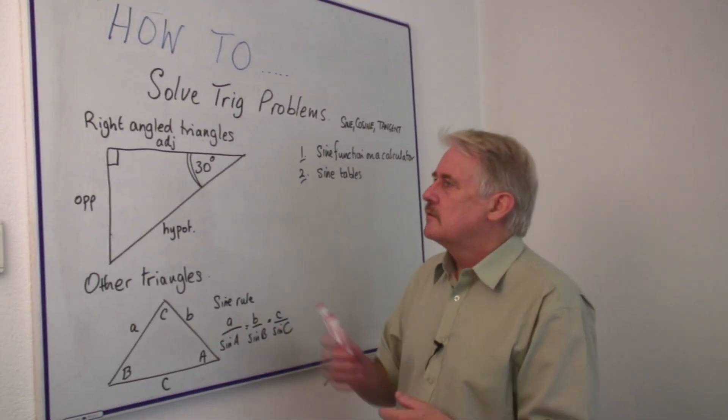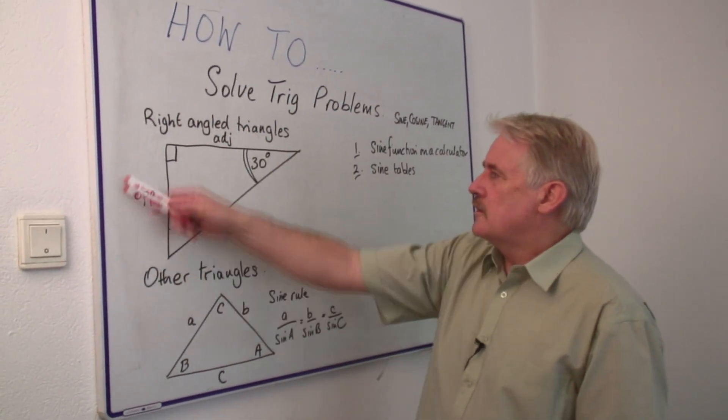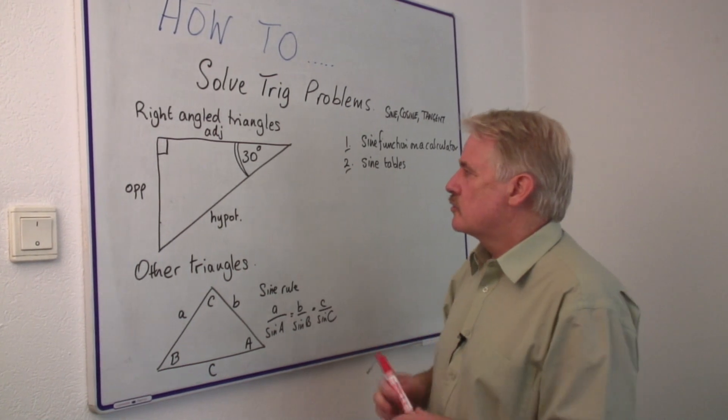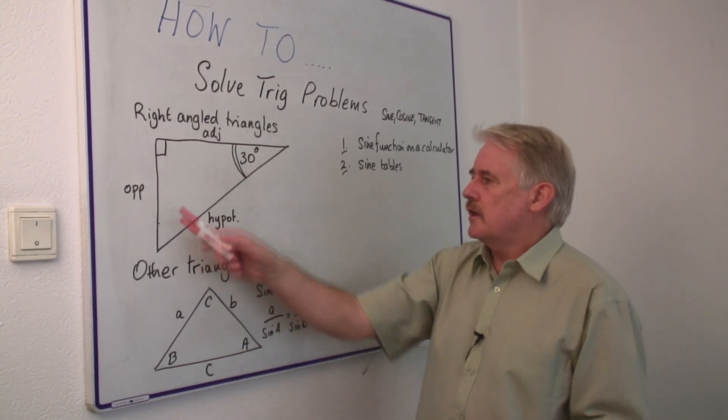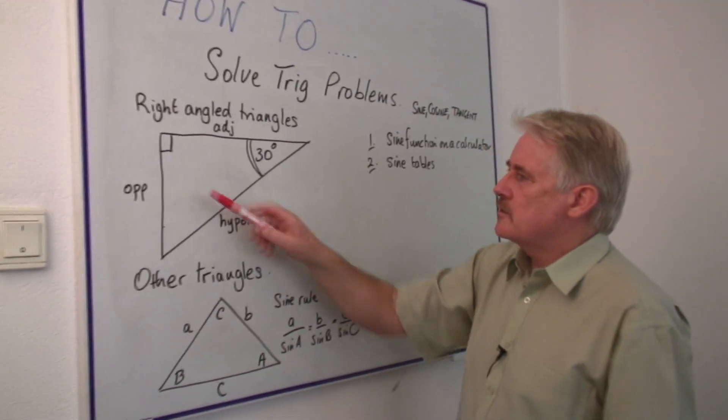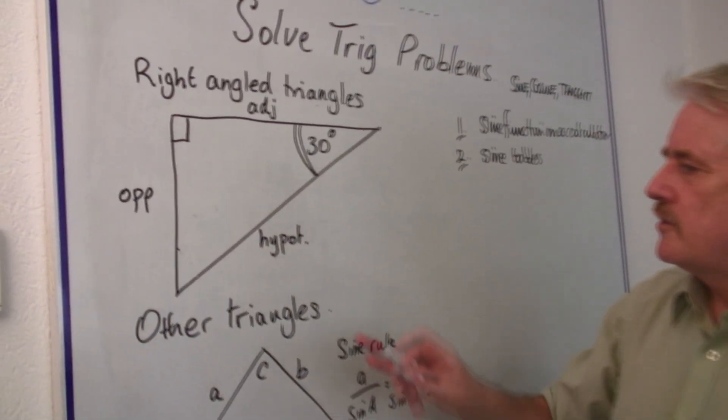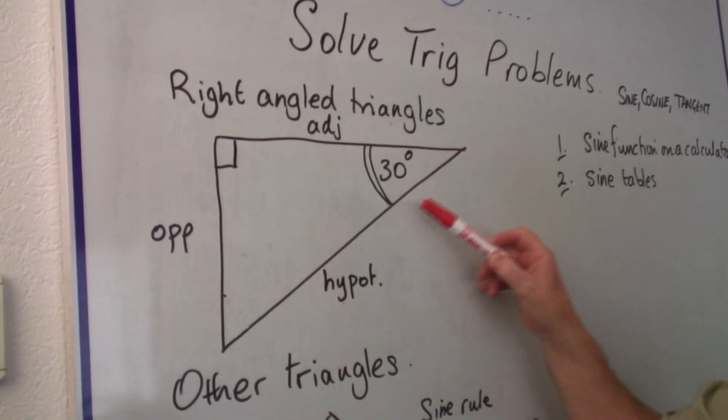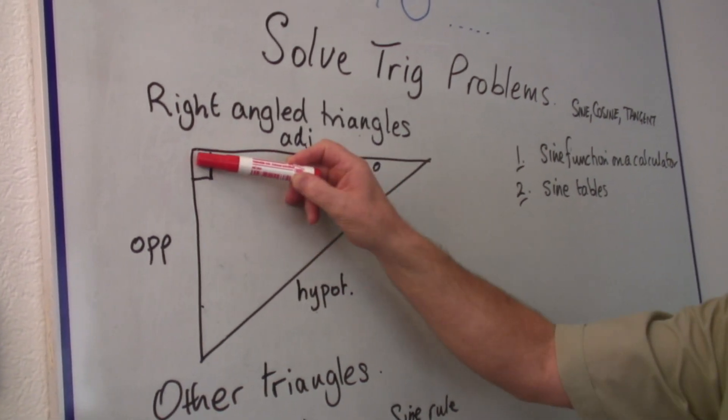Well, the first thing we have to understand is that it's all based on right-angle triangles. We've got a right-angle triangle here with a side adjacent to the angle 30 degrees, opposite to the angle 30 degrees, and the hypotenuse of the right-angle triangle, which is opposite the right angle.